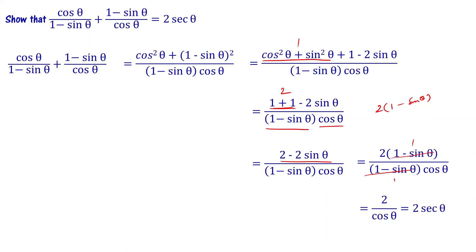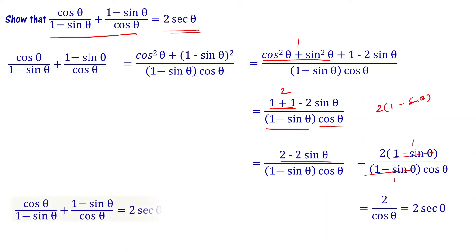We started with the LHS expression, simplified it, and arrived at the RHS. So we can say that cosθ divided by (1 − sinθ) plus (1 − sinθ) divided by cosθ equals 2 secθ. Understood?